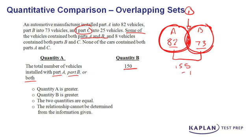So 155 minus 1 gives us 154. If the overlap section was just 1, there would be a bigger quantity in Quantity A than in Quantity B — A would be larger right here.